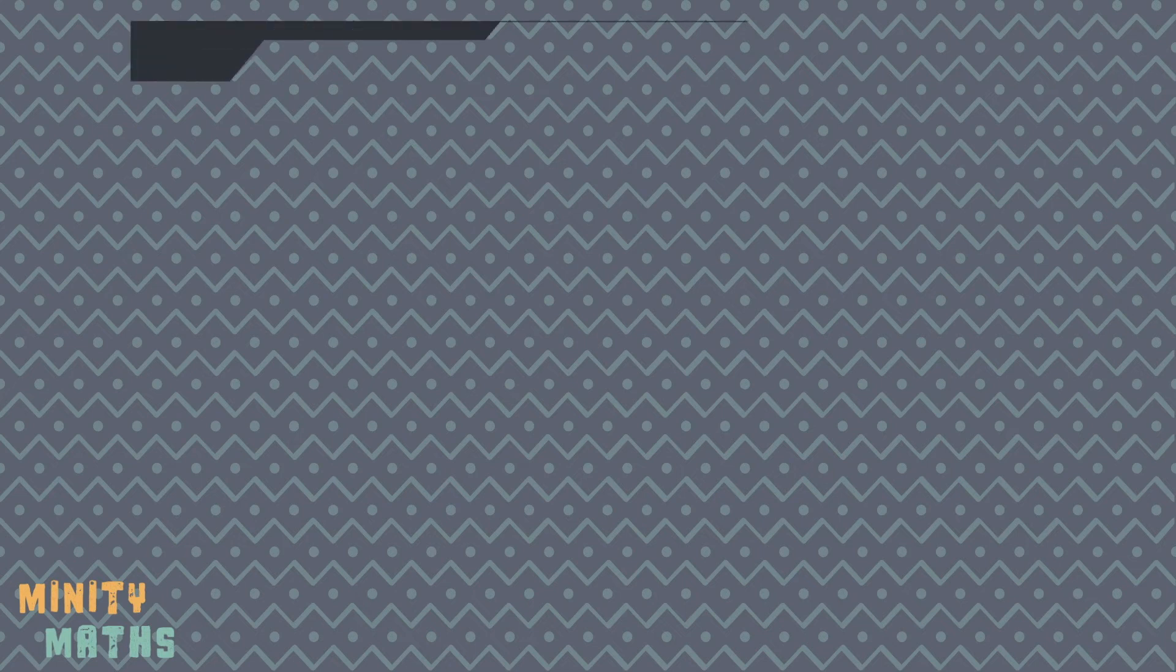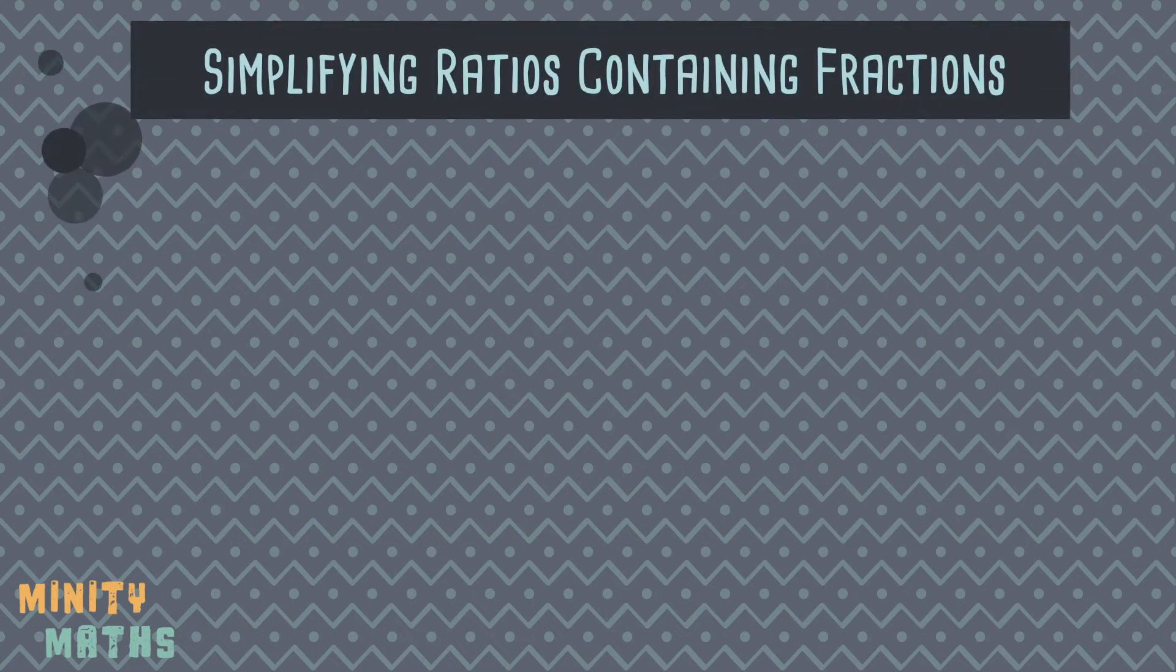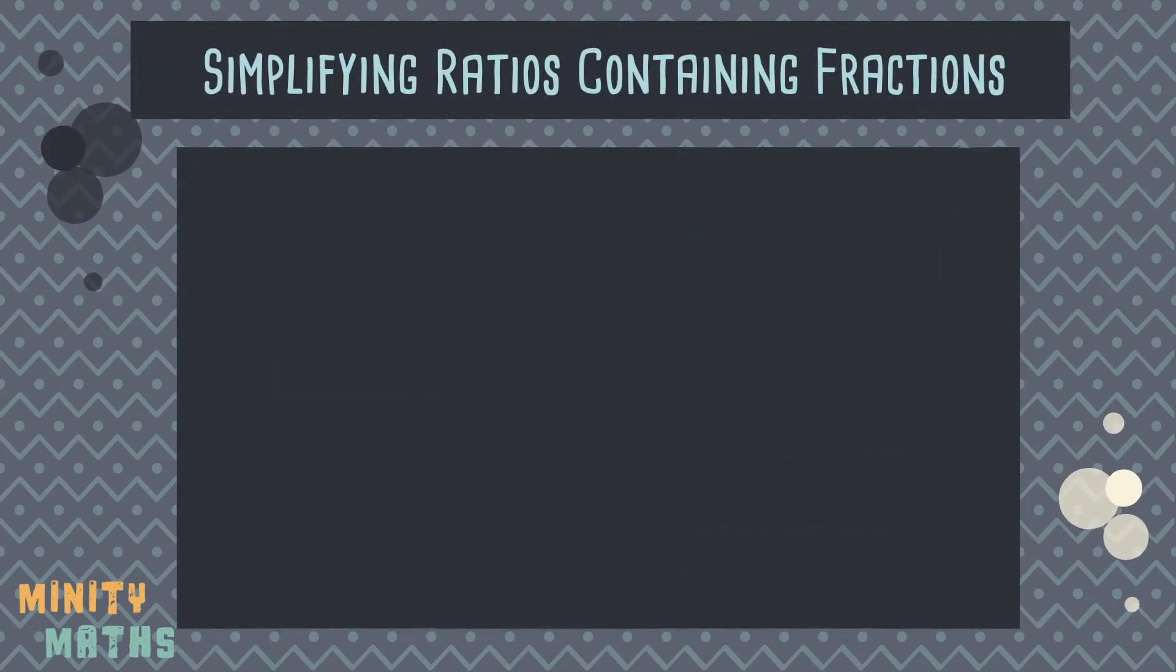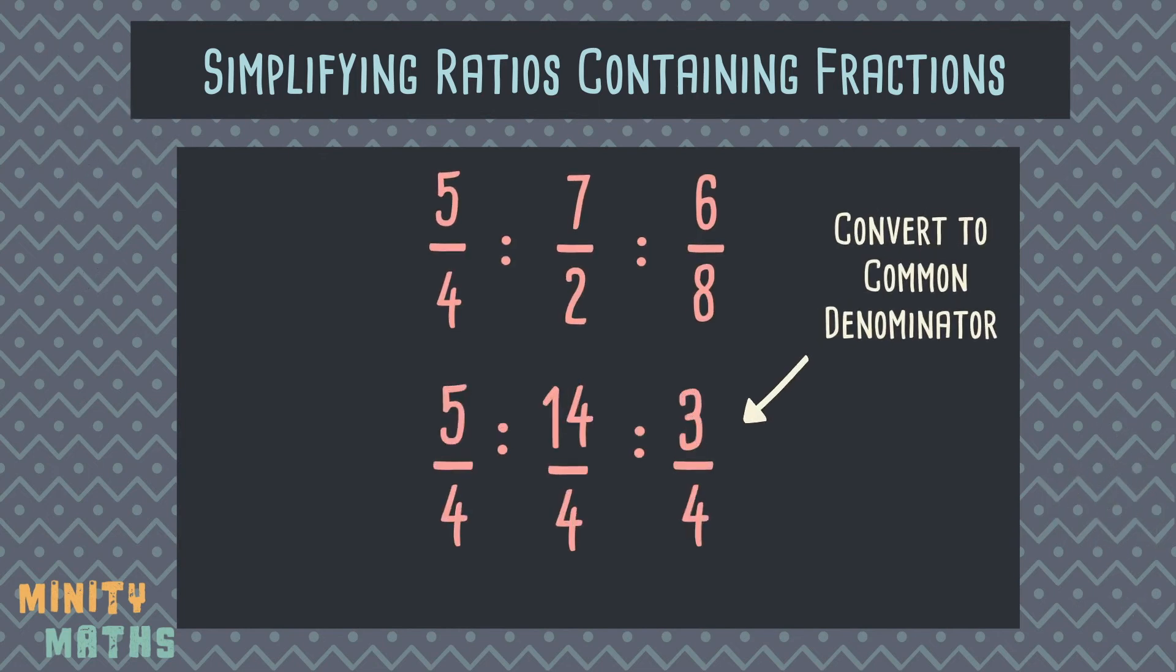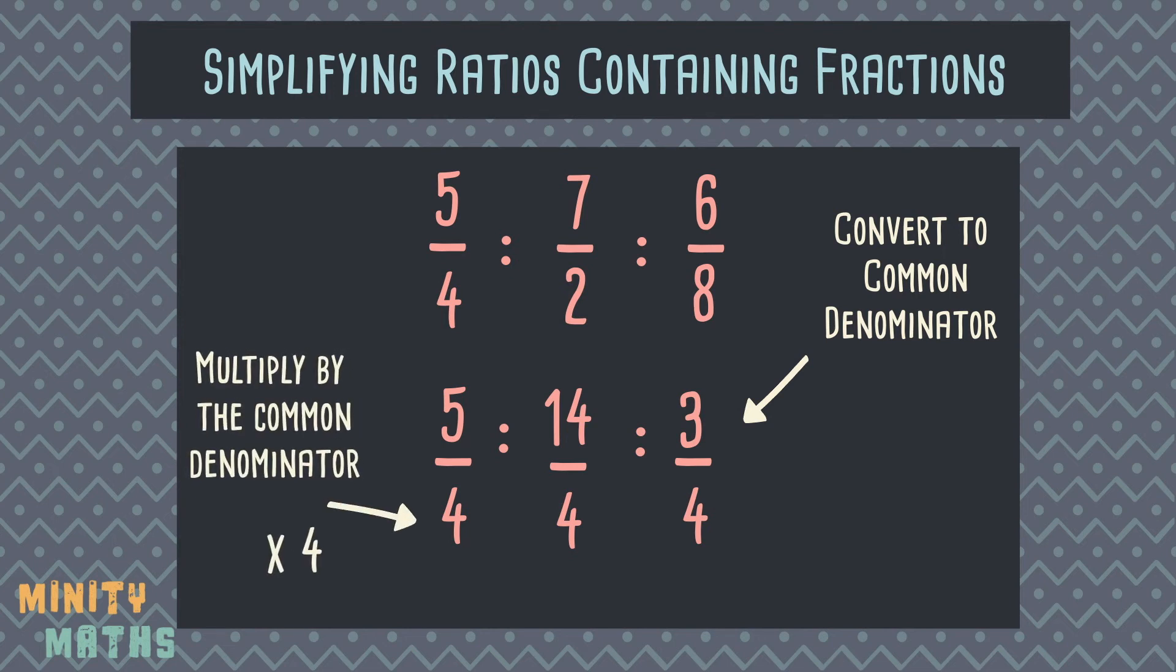Finally, when ratios are written with fractions, we can only simplify once we have all fractions written with the same denominator. So we first need to find a common denominator and rewrite the fractions. Then multiply all the fractions by the same amount as the denominator to turn them into whole numbers. Now we can simplify as usual if possible. In this case, our ratio is already in its simplest form.